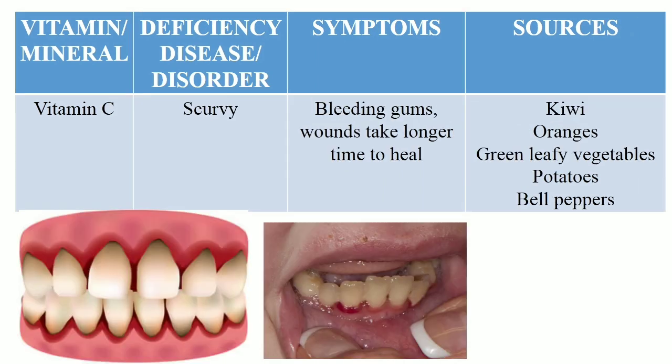Deficiency of vitamin C causes scurvy, a disease which causes bleeding in gums, inability of the body to heal wounds, leading to loss of blood and other diseases. The person should include vitamin C rich food in the diet. Good sources of vitamin C are kiwi, oranges, green leafy vegetables, potatoes and bell peppers.